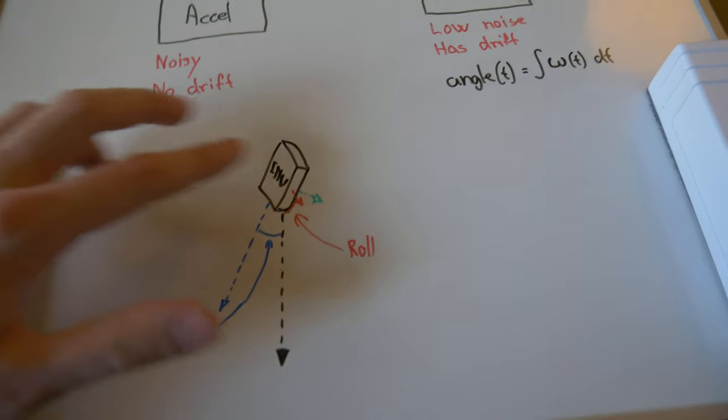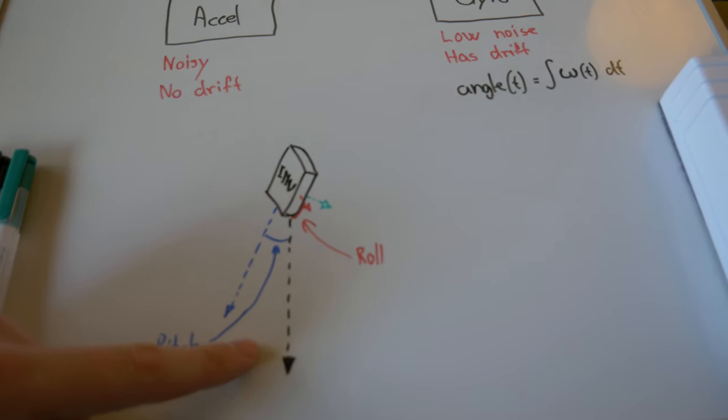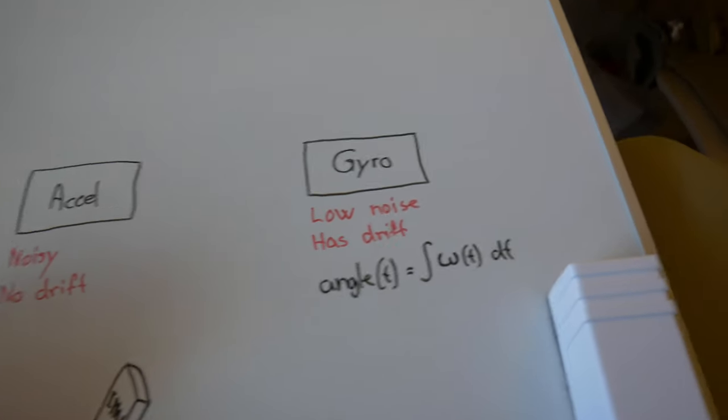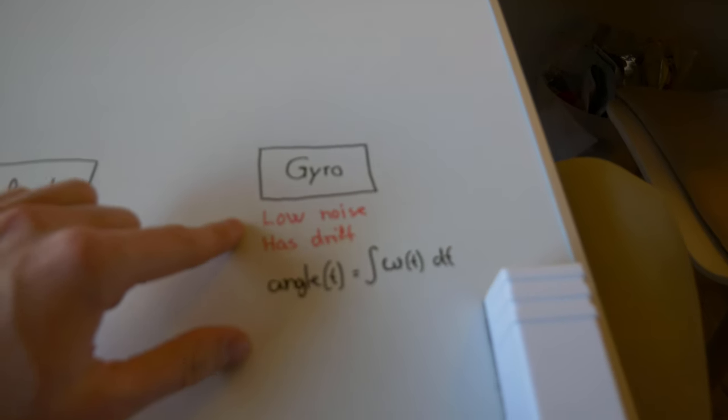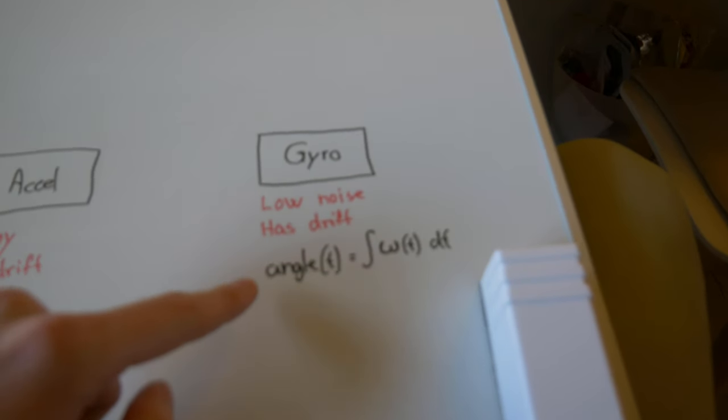If we are talking about the gyro, the gyro has pretty low noise but it has a tendency to drift. And why is that? We are using a rate gyro.